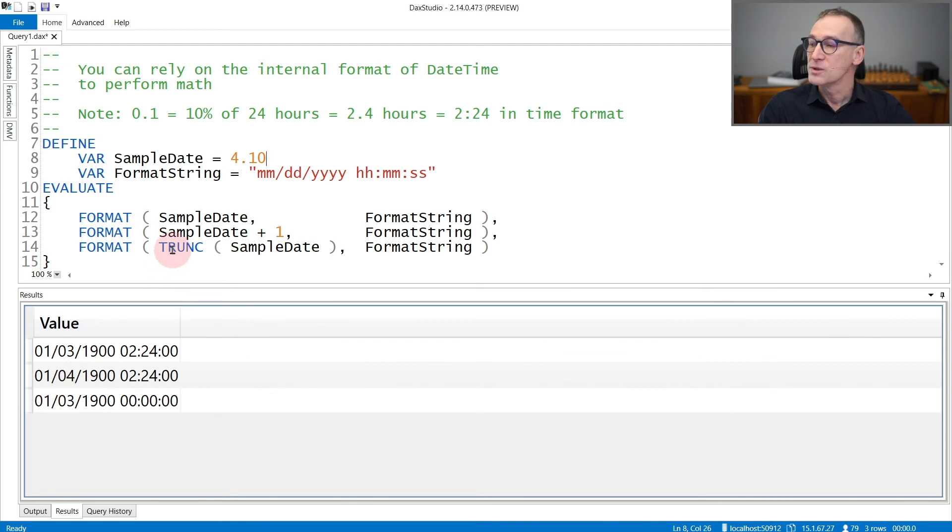And if you use TRUNC to remove the decimal part from sampleDate, what you obtain is only the date part with no time part.